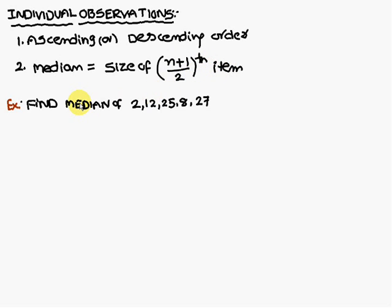Find the median of 2, 12, 25, 8, 27. So first what you have to do? First you have to write the given data in ascending order. So 2, next one is 8,